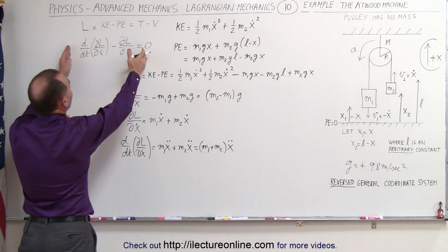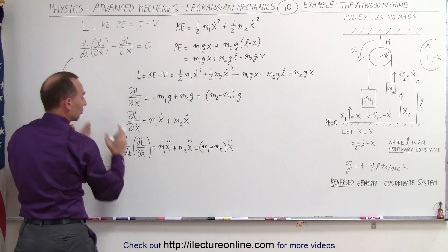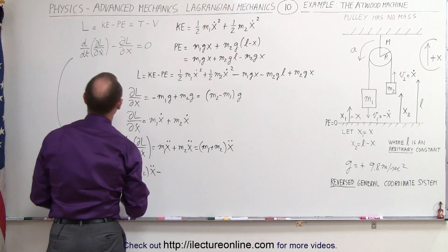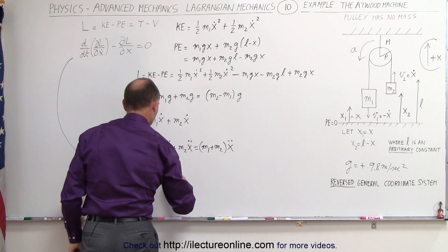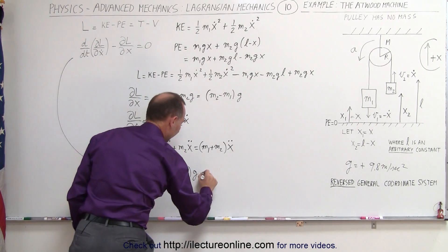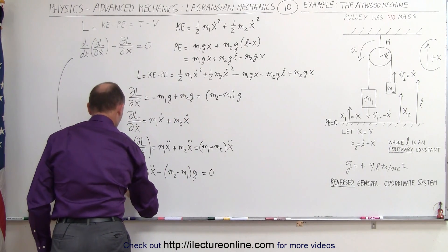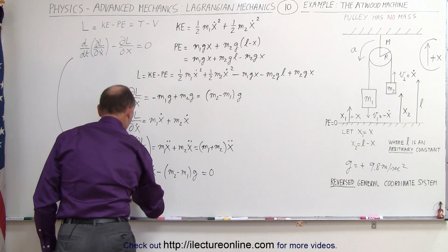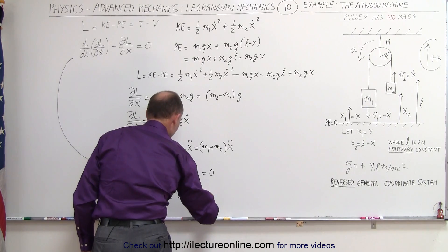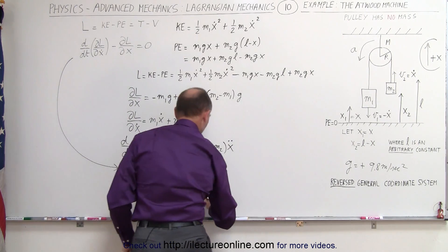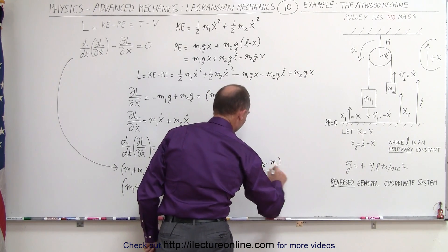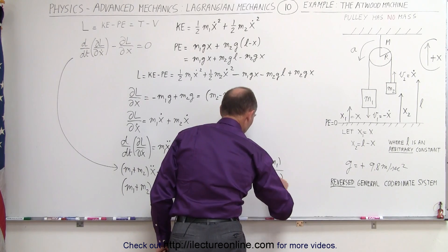Now we can write the Euler-Lagrange equation: (m1 plus m2) times x-double-dot minus (m2 minus m1) times g equals zero. Moving the second term to the other side, (m1 plus m2) times x-double-dot equals (m2 minus m1) times g. Dividing both sides by (m1 plus m2), we get x-double-dot equals (m2 minus m1) divided by (m1 plus m2) times g.